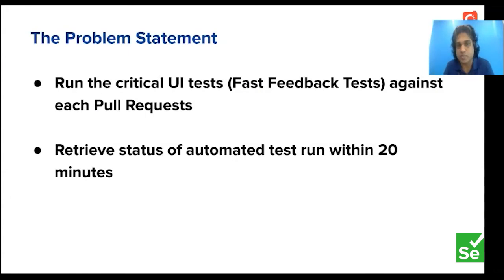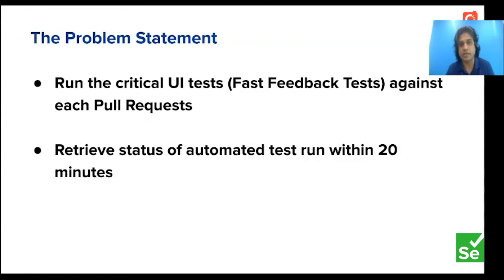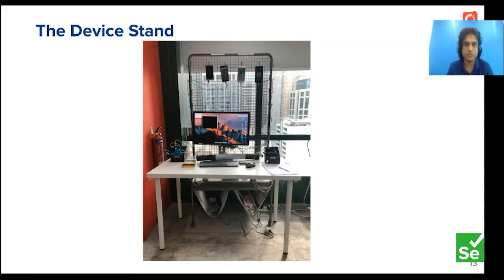About the problem statement: at Carousell we have apps on iOS, Android, and web platforms. We usually do nightly regression tests, but we were thinking about running a subset of around 20 critical UI tests against each pull request. One key criteria was getting the test status within 20 minutes, including build time. In other words, when a developer opens a pull request, goes for a coffee break, and comes back after 20 minutes, they should be able to see the test status on GitHub. We call it a fast feedback test.